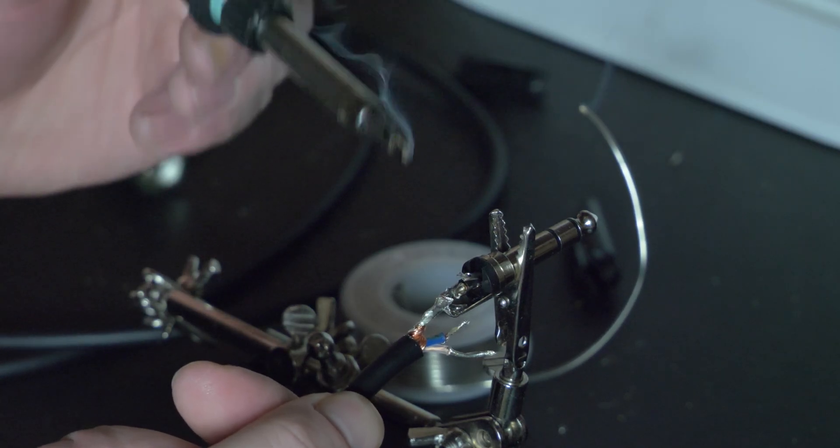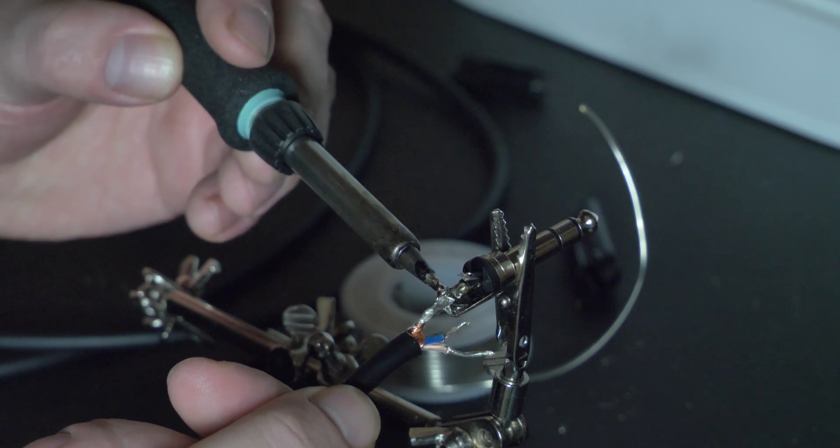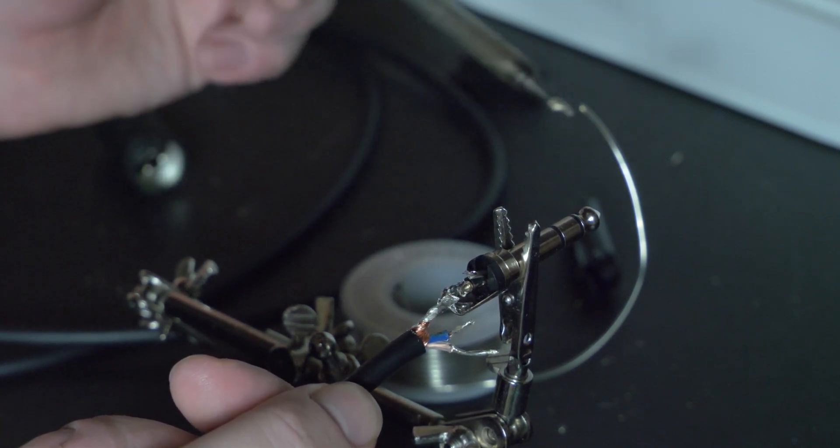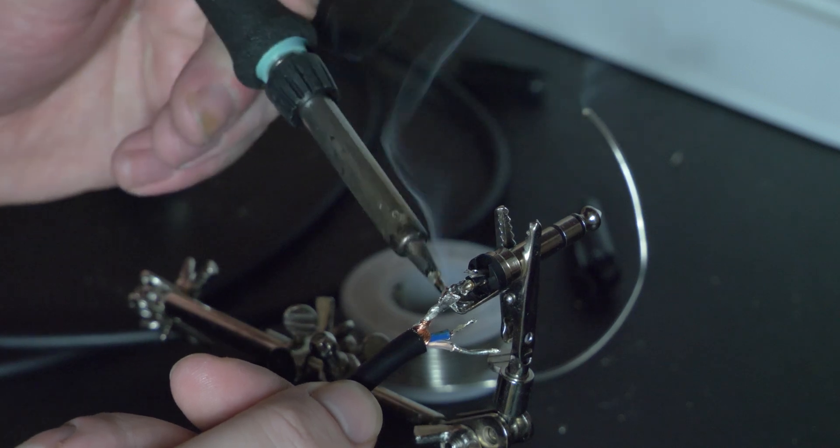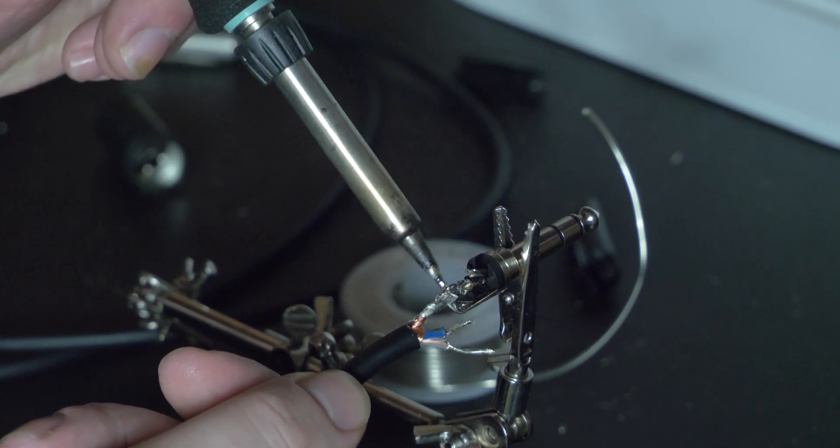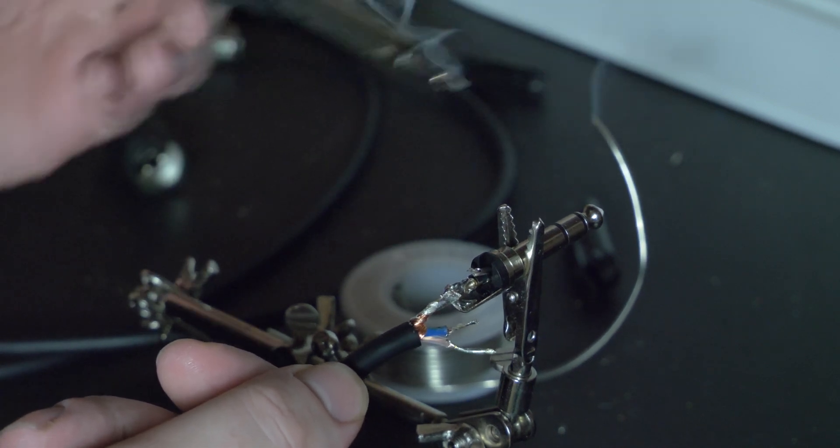Once all your wire ends and plug contacts are tinned to ensure a strong bond, begin by securing the ground wire to the left side of the plug casing. I definitely found this one to be tricky. Try and tack it in place, and then slowly add more solder to secure it in place, especially from underneath.